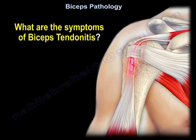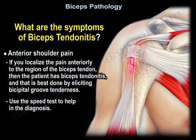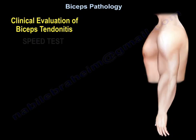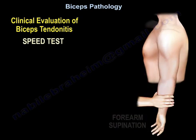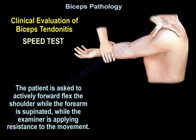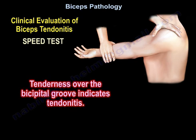What are the symptoms of biceps tendonitis? Anterior shoulder pain — if you localize the pain anteriorly to the region of the biceps tendon, the patient has biceps tendonitis. That is best confirmed by eliciting bicipital groove tenderness and using the Speed test. The Speed test is done by asking the patient to actively forward flex the shoulder while the forearm is supinated, while the examiner applies resistance to the movement. Tenderness over the biceps tendon indicates biceps tendonitis.